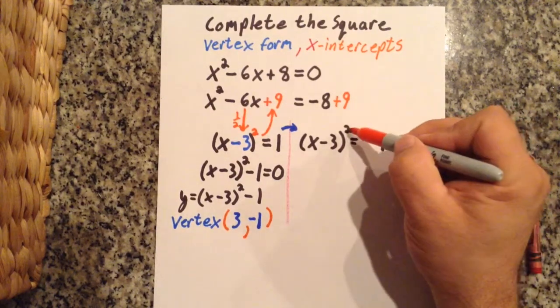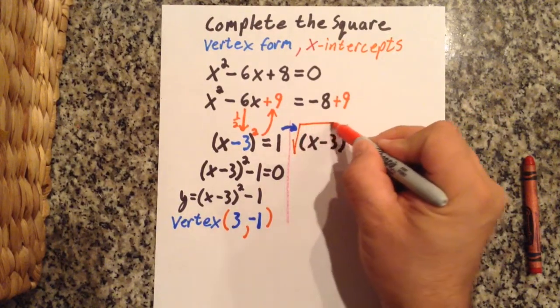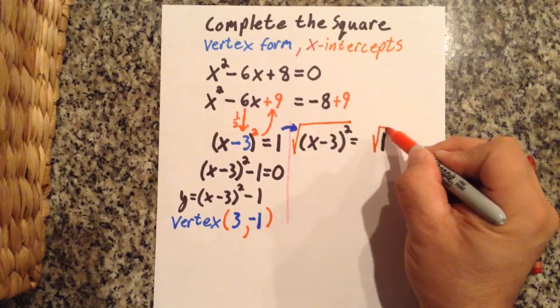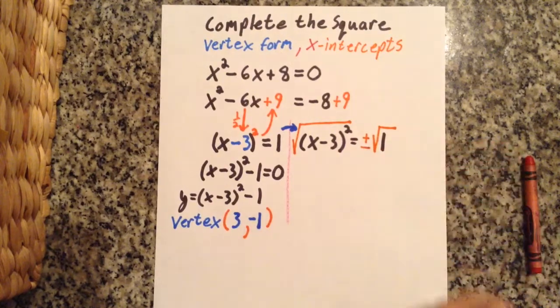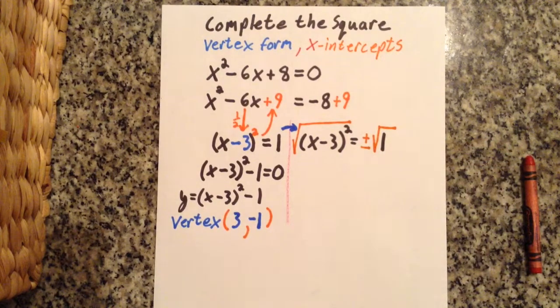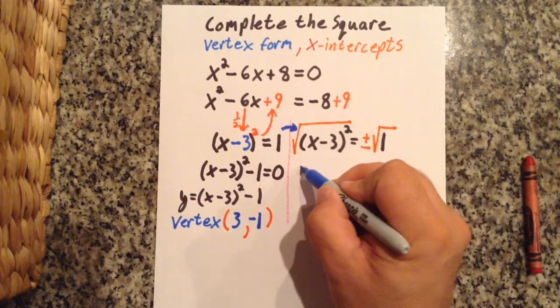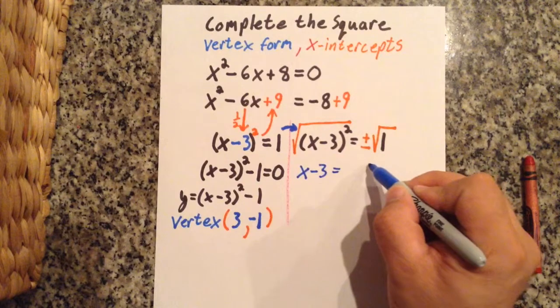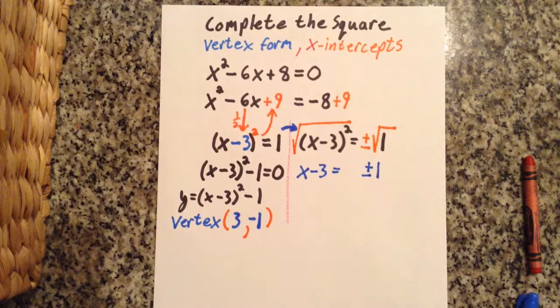So I left a little space. The opposite of squaring is square rooting, so if I square root the left side I have to square root the right side as well. When you add the square root, you add the plus minus. Now that square root cancels out that square. That's going to give me x minus 3 equals plus minus 1, because the square root of 1 is 1.